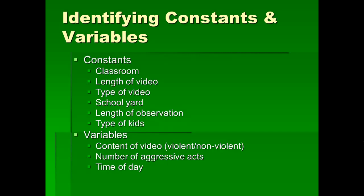Now we're moving on to the second issue I raised: how do you go about testing the hypothesis? The way we test the hypothesis is by varying certain variables and seeing the results of those variations. We first need to identify the variables being varied in the experiment. To begin, let's talk about constants — things that are the same throughout the experiment.